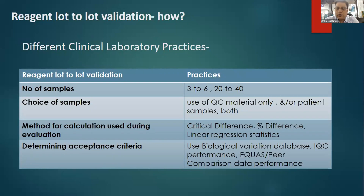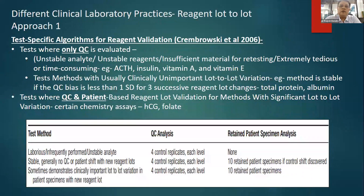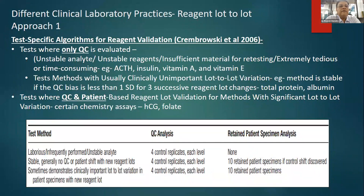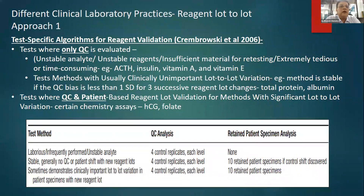When pondering these questions and looking at medical literature, I came across a very good article by Krembowski et al. in 2006. This author elaborated that we should look at lot-to-lot reagent validation based on the performance of the test. For tests where the analyte is extremely unstable — for example ACTH and insulin, where the storage and retention stability of the analyte is poor — the question of using patient samples becomes redundant. We must rely only on QC material because the analyte itself is so unstable.